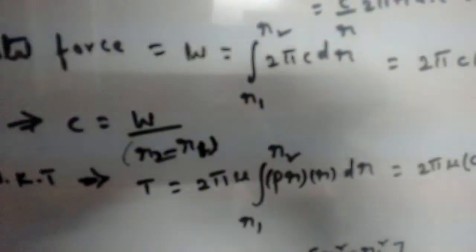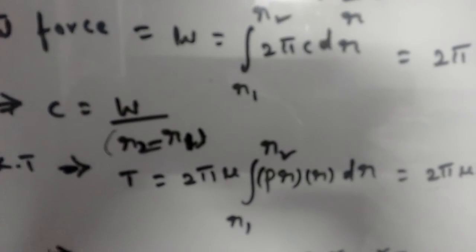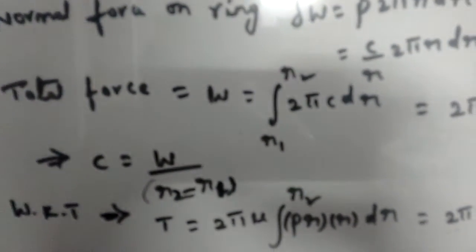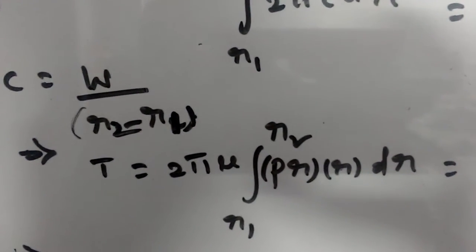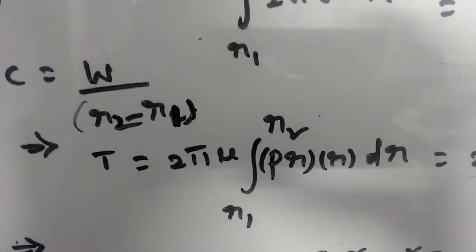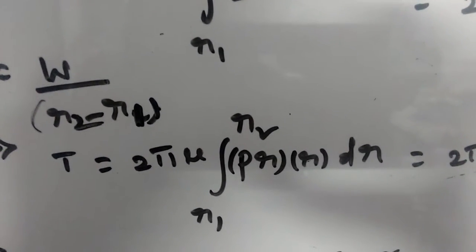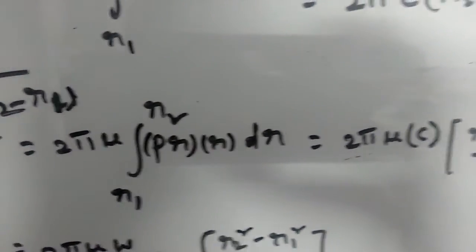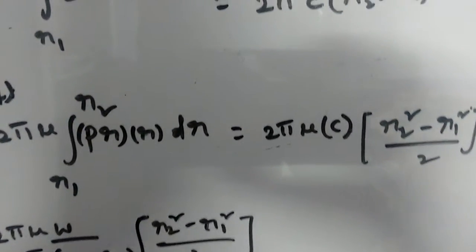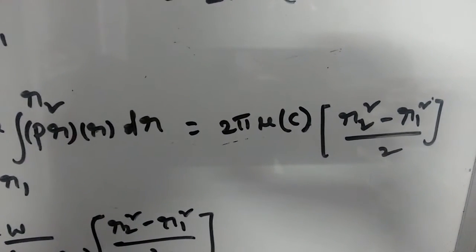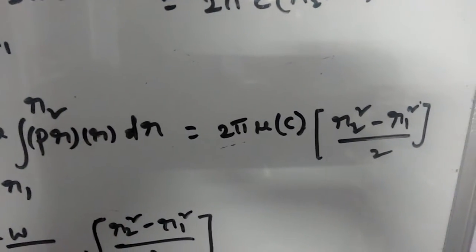The frictional torque acting on the plate is T = ∫2π·μ·p·r²·dr. This equation was derived in the earlier video on torque transmitting capacity using uniform pressure theory. From uniform wear theory, p·r = constant, so the product p·r can be taken outside the integration. The integral of r is r²/2, applying limits r1 to r2, giving 2π·μ·c·(r2² − r1²)/2.